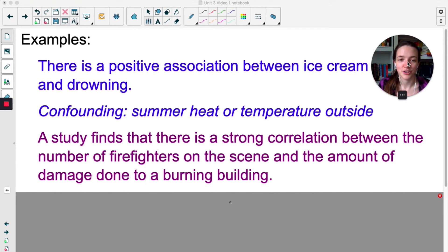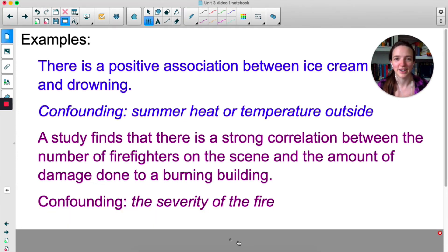Here's another example. A study finds that there's a strong correlation between the number of firefighters on the scene and the amount of damage done to a burning building. Like, hey, when we send more firefighters to the scene, there's more damage done to the building. These darn firefighters. No. Well, that's not really true. Confounding is the severity of the fire. If the fire is more intense, you're going to send more firefighters and there's also going to be more damage on the building. So a confounding or lurking variable is a variable that is somehow related to the explanatory response variable and might influence the response variable to create a false association between the explanatory and the response.